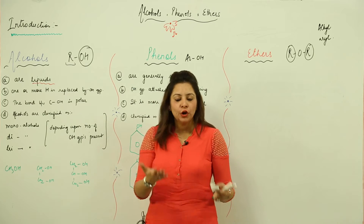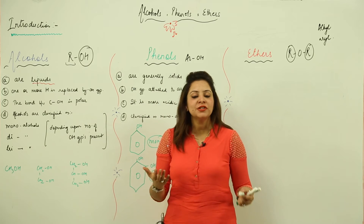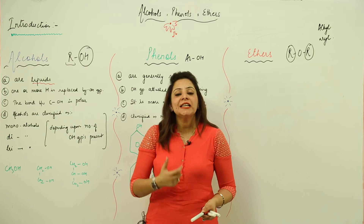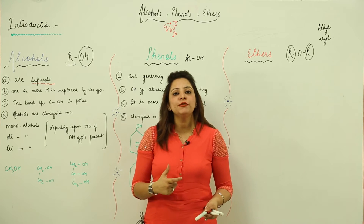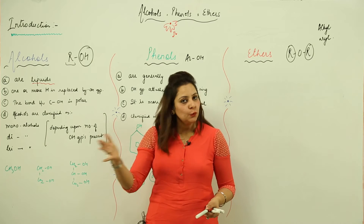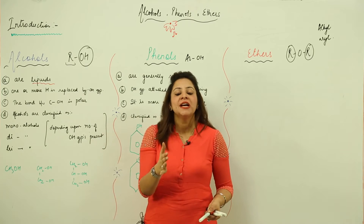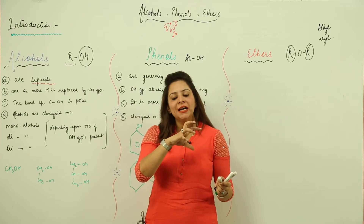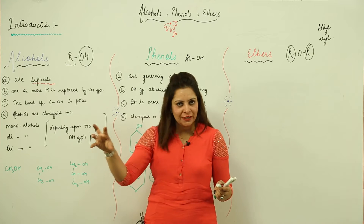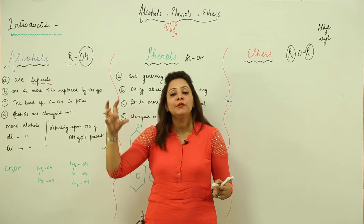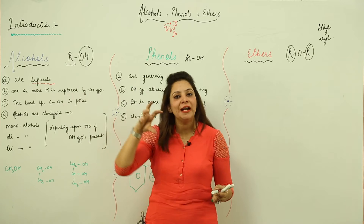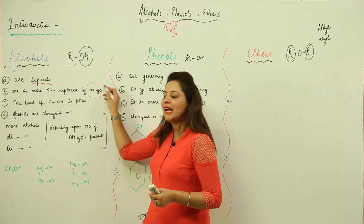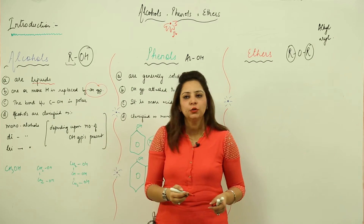As I have already introduced you, alcohols are actually formed when we replace one H atom with the OH group. That means we replace one hydrogen of the aliphatic compound and add an OH group instead. When we do that, we get an alcohol.